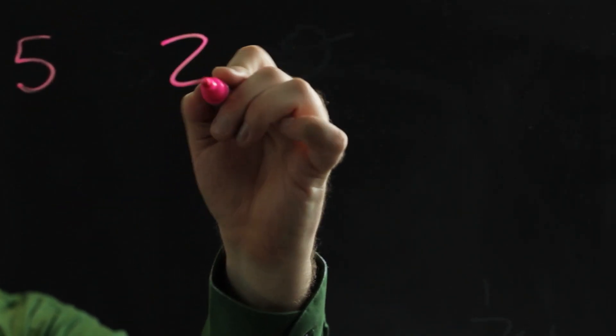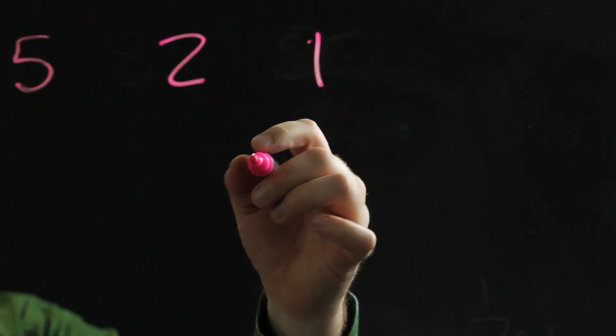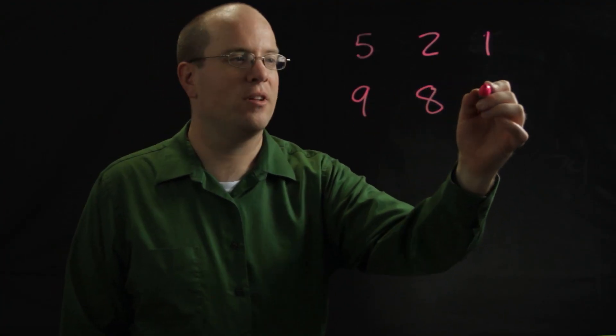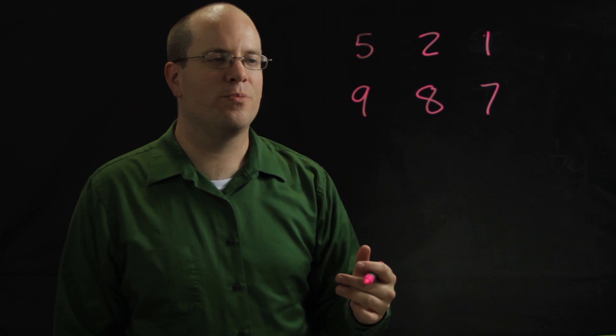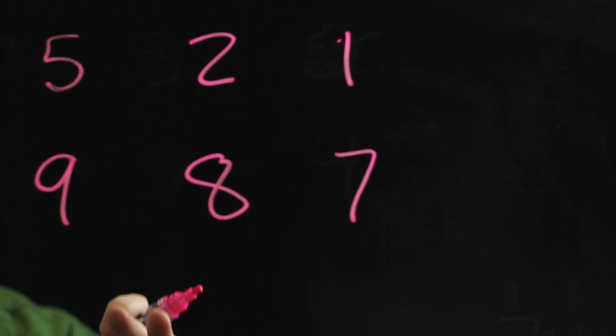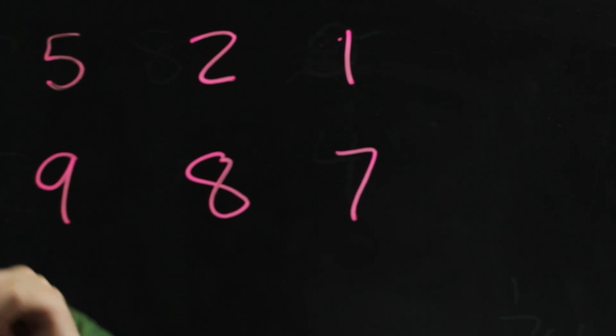The next game I'm going to show you is called Close to Zero. This is similar to the other game, only this one involves subtraction. Now here are the six cards I drew, same deck of cards. This time I'm going to choose four cards to arrange into a subtraction problem that gets as close to zero as I can.